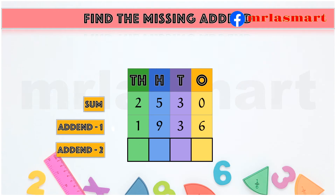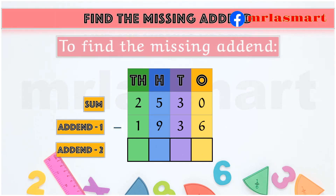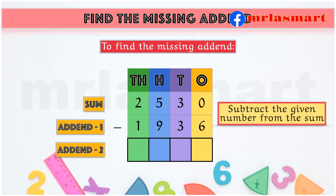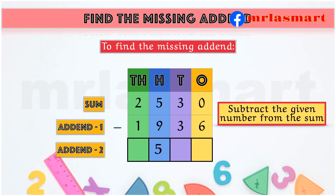To find the missing addend, subtract the given number from the sum. The answer is 594.